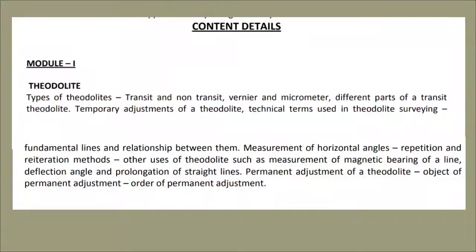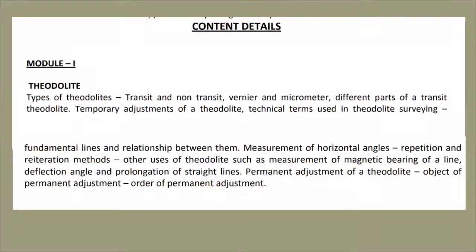So this is the end of this chapter. The topics covered include: parts and functions of theodolite, different terms used in theodolite, temporary adjustments, angle measurement, measurement of deflection and magnetic bearing, methods for prolonging a straight line, and finally permanent adjustments.